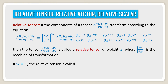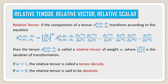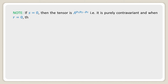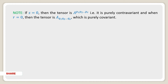If w equal to 1, the relative tensor is called a tensor density. If w equal to 0, then the relative tensor is said to be absolute. Note: if s equal to 0 then the tensor is a^(p1 p2 ... pr), that is it is purely contravariant; and when r equal to 0 then the tensor is a_(q1 q2 ... qs), which is purely covariant.